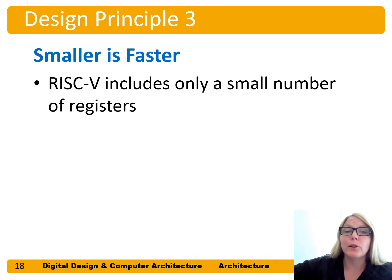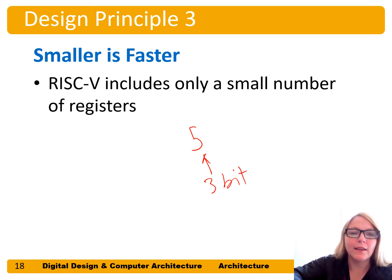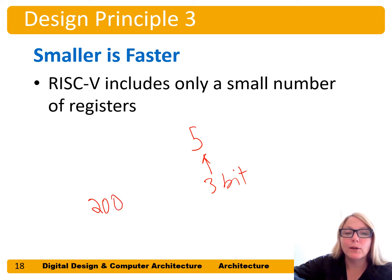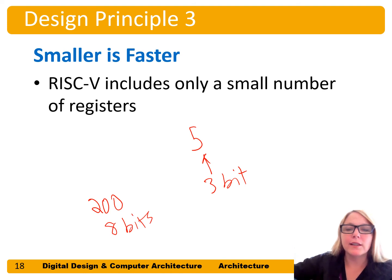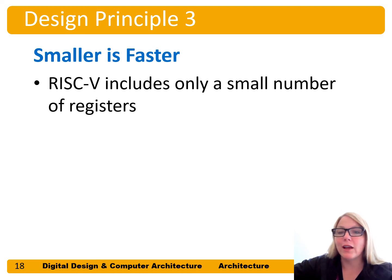This is an example of Design Principle 3: smaller is faster. We illustrated this with the number of instructions — if we have five instructions, we only need three bits to encode which one we need. But if we had 200 different instructions, we'd need at least eight bits of encoding, increasing complexity and the number of wires needed. Likewise, RISC-V includes 32 registers because it's faster to access 32 instead of, say, a thousand registers.